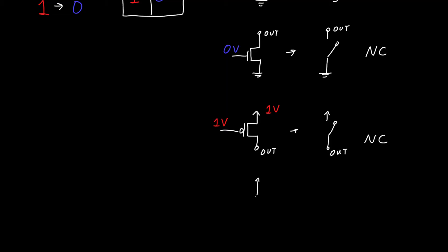But when we apply 0 to the PMOS, so when we apply 0 volts to the PMOS, then this acts like a wire from, I'm going to call this 1 volt or VDD, to our output. And so in this case, our output is 1 volt, which is exactly what we were looking for.